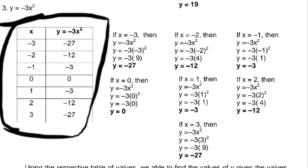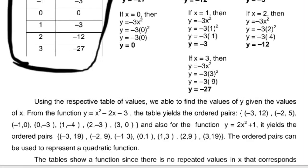Using the respective tables of values, we find ordered pairs. From y equals x squared minus 2x minus 3, the table yields: (−3, 12), (−2, 5), (−1, 0), (0, −3), (1, −4), (2, −3), (3, 0). From y equals 2x squared plus 1: (−3, 19), (−2, 9), (−1, 3), (0, 1), (1, 3), (2, 9), (3, 19). These ordered pairs can be used to represent a quadratic function.